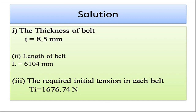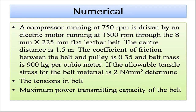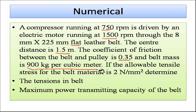A practice problem is given: a compressor running at 750 rpm is driven by an electric motor at 1500 rpm through an 8 mm × 225 mm flat leather belt. Center distance is 1.5 m, coefficient of friction is 0.35, belt density is 900 kg/m³, and reliable tensile stress is 2 N/mm². Determine the tension in the belt and the maximum power transmission capacity.